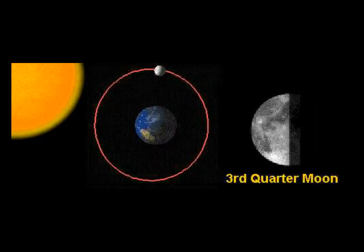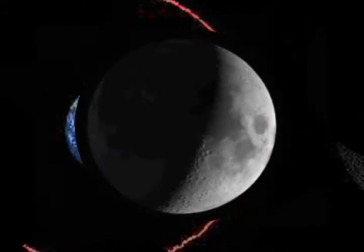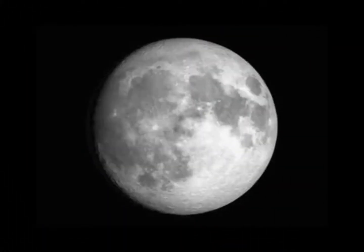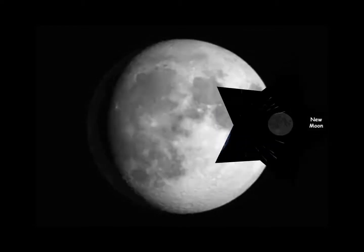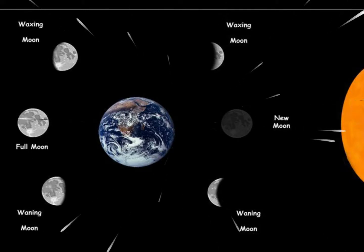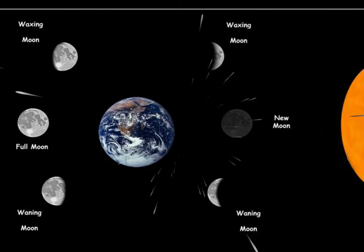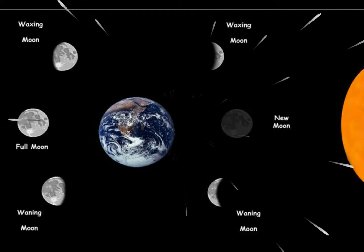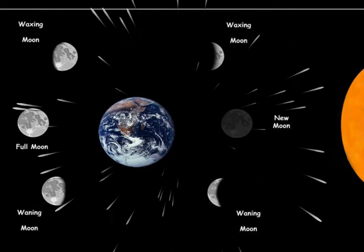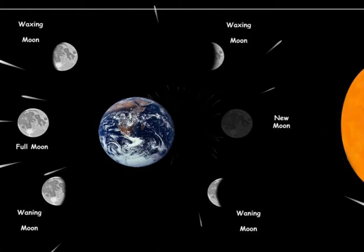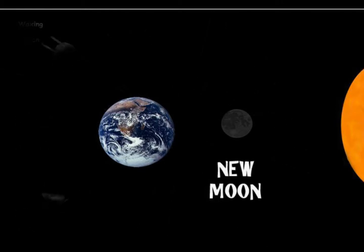When the moon orbits the Earth, we see different shapes. These are called moon faces. The moon faces are: new moon, waxing moon, waning moon, and full moon.